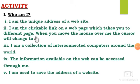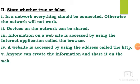Now you have an activity. 'Who am I?' — First question: I am the unique address of a website. I am the clickable link on a webpage which takes you to a different page. When you move the mouse over me, the cursor will change to a hand icon. I am a collection of interconnected computers around the world. The information available on the web can be accessed through me. I am used to save the address of a website. Next, state whether true or false: In a network, everything should be connected, otherwise the network will not work. Devices on the network can be shared. Information on a website is accessed by using the internet application called the browser. A website is accessed by using the address called HTTP. Anyone can create information and share it on the web.